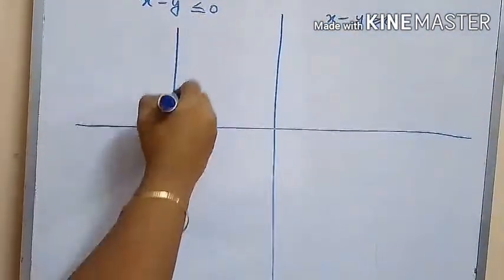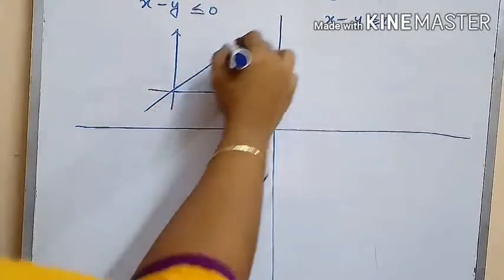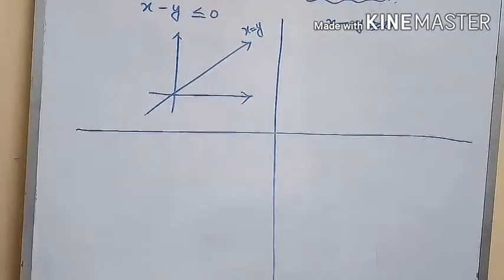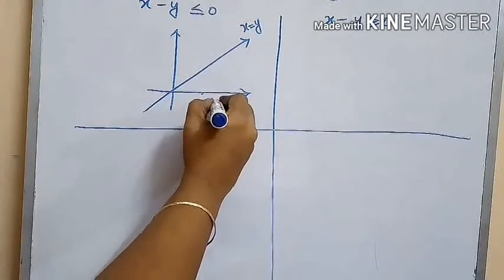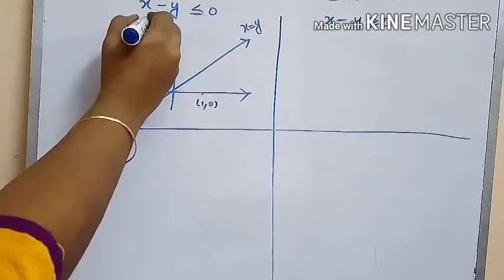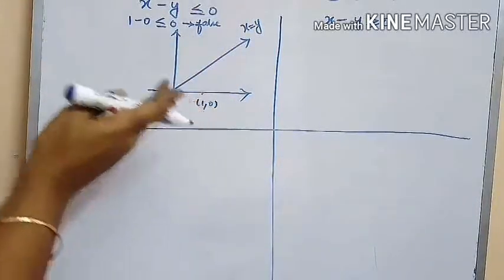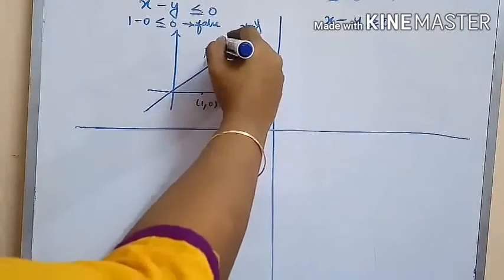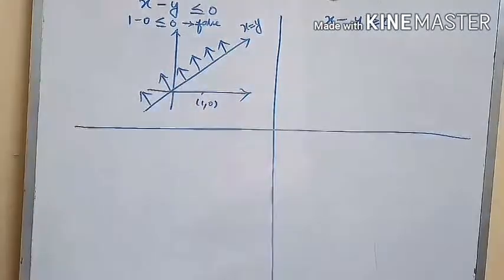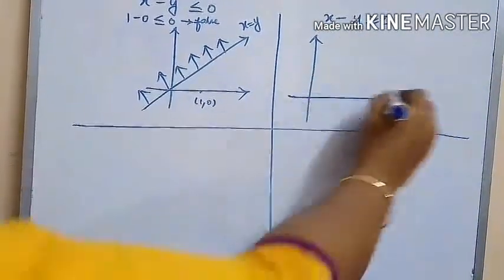Let us consider the inequality X minus Y less than or equal to zero. The line is X equals Y, which passes through the origin. Mark the point (1, 0) and substitute into the inequality: we get 1 minus 0 less than or equal to 0, which is a false statement — 1 is not less than zero. So the shading of the solution space should be away from and on the opposite side of the point (1, 0).